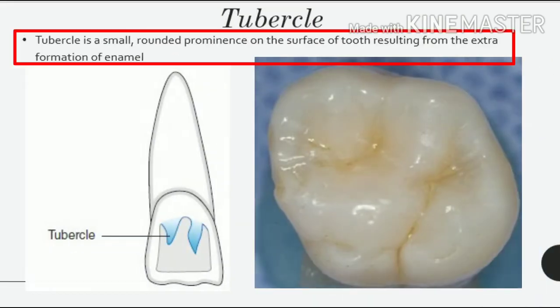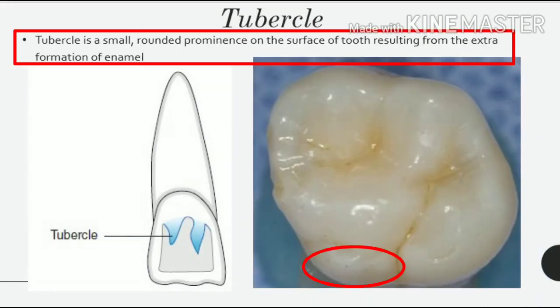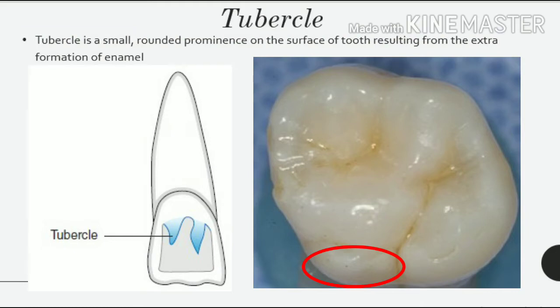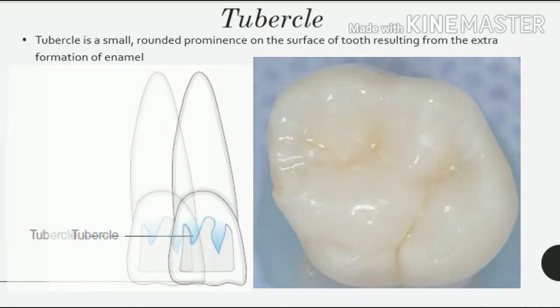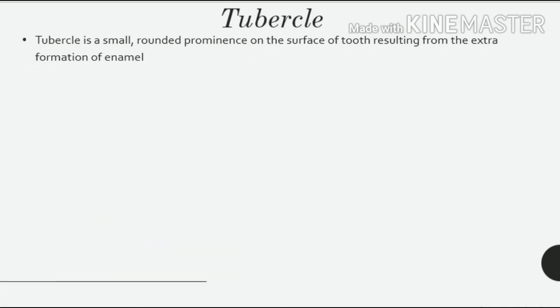Tubercle. A tubercle is a small, rounded prominence on the surface of a tooth resulting from the extra formation of enamel. Tubercles are usually deviations from the normal form. For example, the cusp of Carabelli is a tubercle.